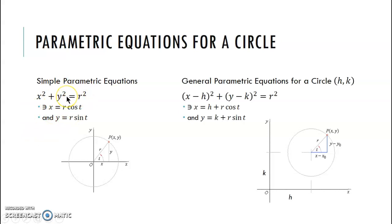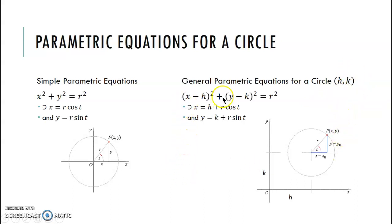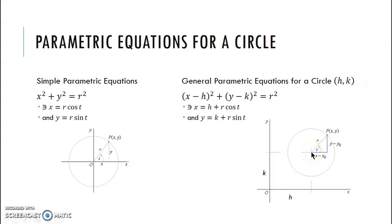Not every circle is centered at the origin, so we have to consider transformed circles where the center is at (h, k). H always has to do with our horizontal transformation, k with our vertical translation. Our rectangular circle equation changes to: (x − h)² + (y − k)² = r², where h and k are the center of the circle — the x and y coordinates of the center.